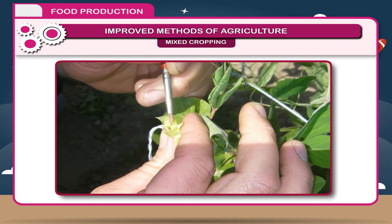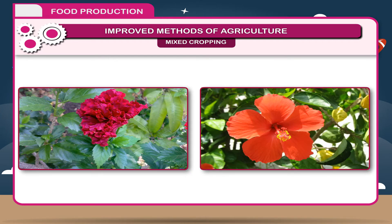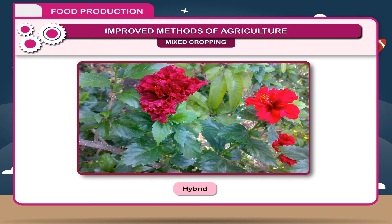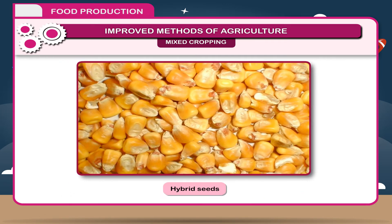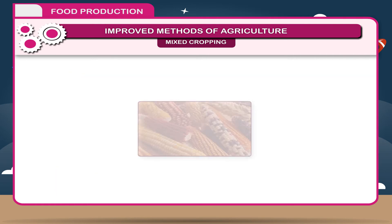Hybrid seeds. The crossing of different parents is called hybridization. It combines the desirable characters of two or more varieties. When two different varieties of plants are crossed, a new variety of plant is developed called hybrid. The seeds obtained from such plants are called hybrid seeds. Hybrid seeds are more improved varieties to increase the yield, size, quality and fruiting.